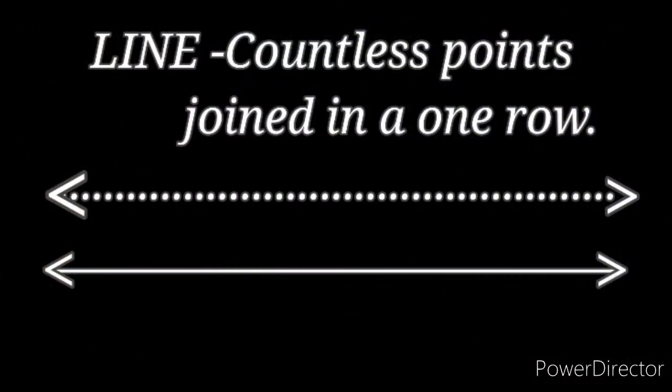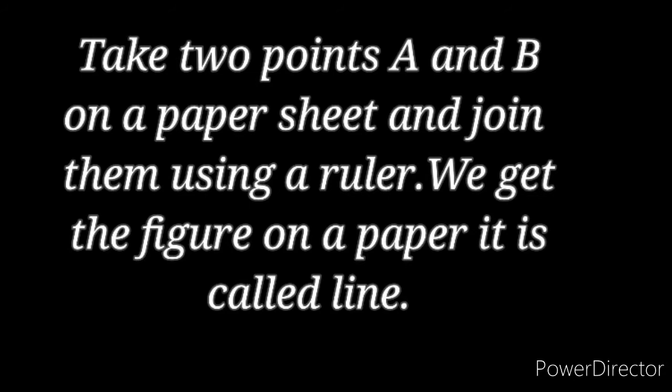The second basic concept in Geometry is Line. When countless points join in one row, we get a figure called a Line. In other words, take two points A and B on a paper sheet and join them using a ruler — the figure you get on the paper is called a Line.